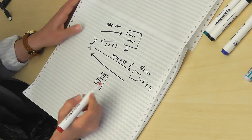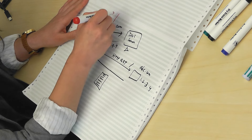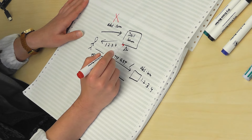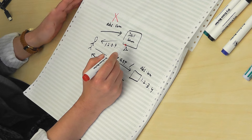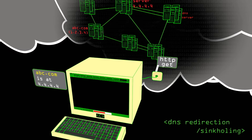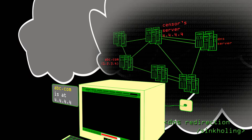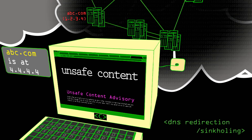This involves interaction between different entities. What a censor can do is block the user's connection at the DNS step — when the user asks for the IP address corresponding to abc.com, the censor-controlled DNS server could either say that this domain does not exist, or return a false IP address like 4.4.4.4, which is under the control of the censor. This is called DNS redirection or DNS sinkholing.